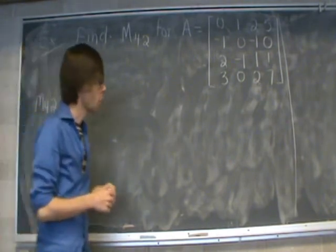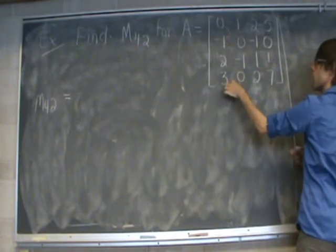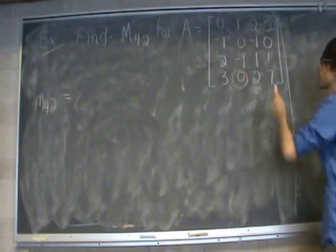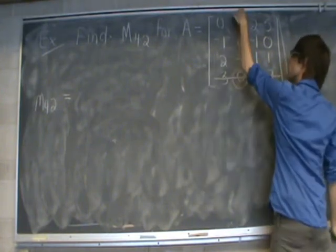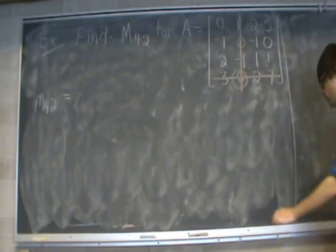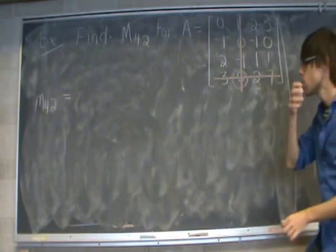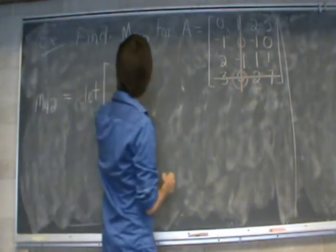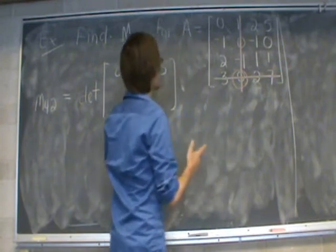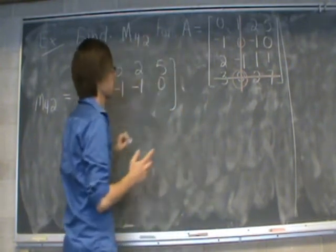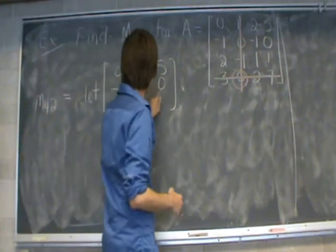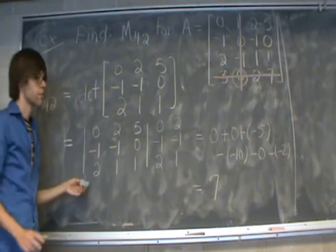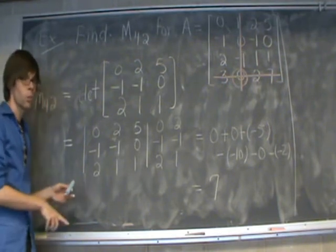Find the 4,2 entry: that is in row 4, column 2, which is this 0. We delete all information in row 4 and column 2, and the numbers left over become our determinant. So we calculate the determinant of the 3x3 matrix: 0, 2, 5; −1, −1, 0; 2, 1, 1. Here is all of the work to find that 3x3 determinant using the weave method.